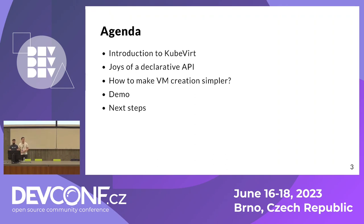Let's have a quick look at today's agenda. First I will give a short introduction to KubeVirt. Then we'll have a look at the joys of a declarative API. Next we'll look at how to make VM creation in KubeVirt simpler. Then we'll show a demo of the things we were able to achieve. Lastly, we will point out some next steps for the instance types in KubeVirt.